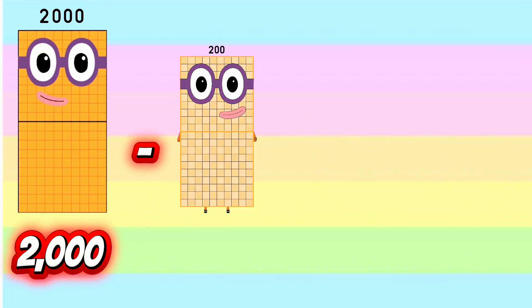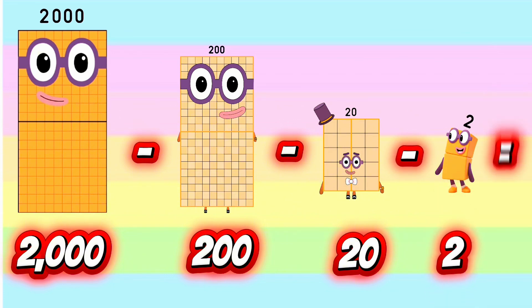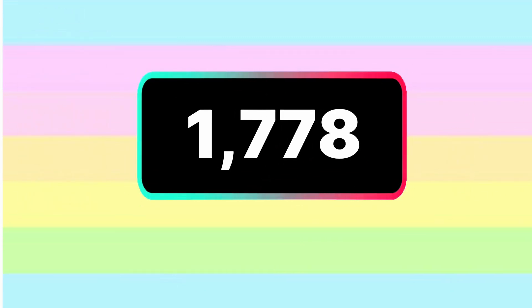2,000 minus 200 minus 20 minus 2 equals 1,778.